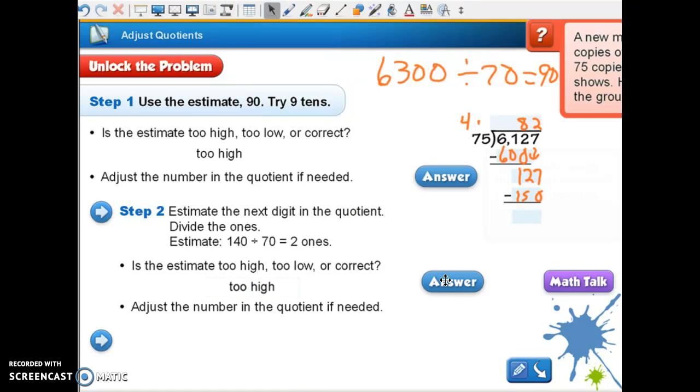2 times 5 is 10, 2 times 7 is 14 plus 1 is 15. Is that going to work? No, our estimate was too high. So we're going to have to adjust again, so we're going to make this a 1.